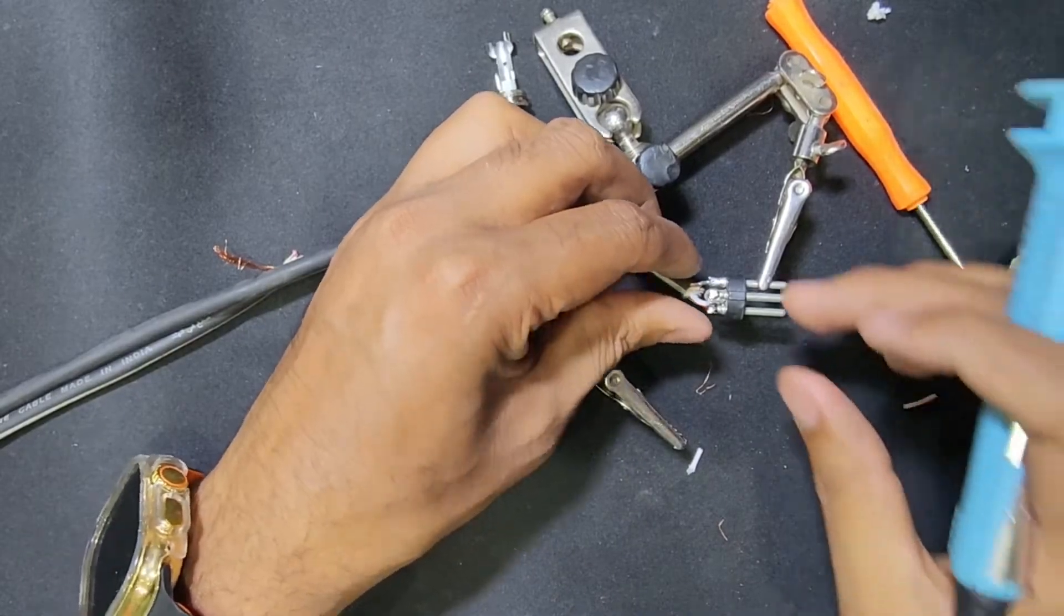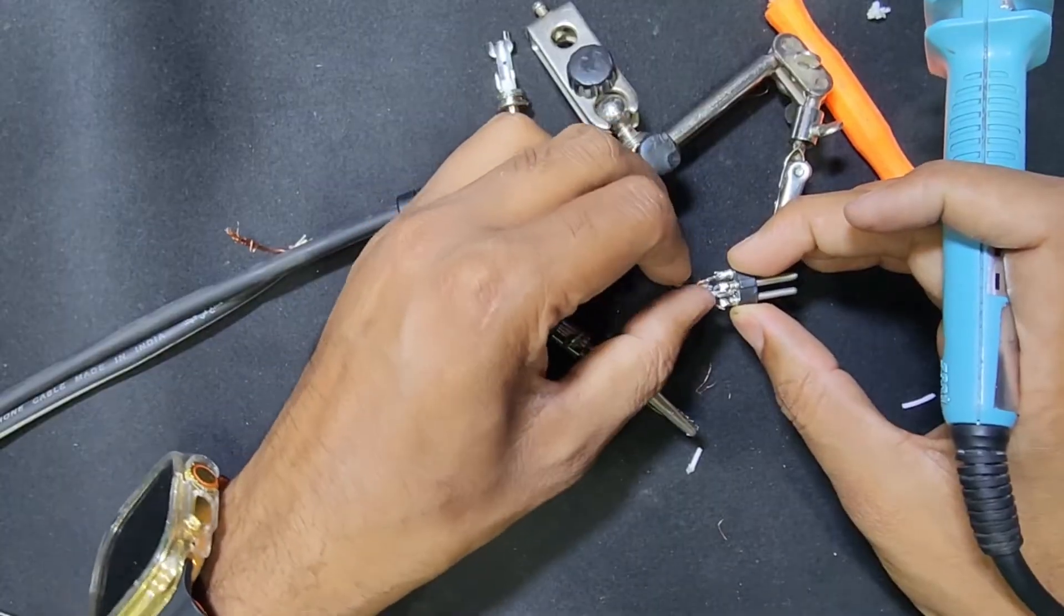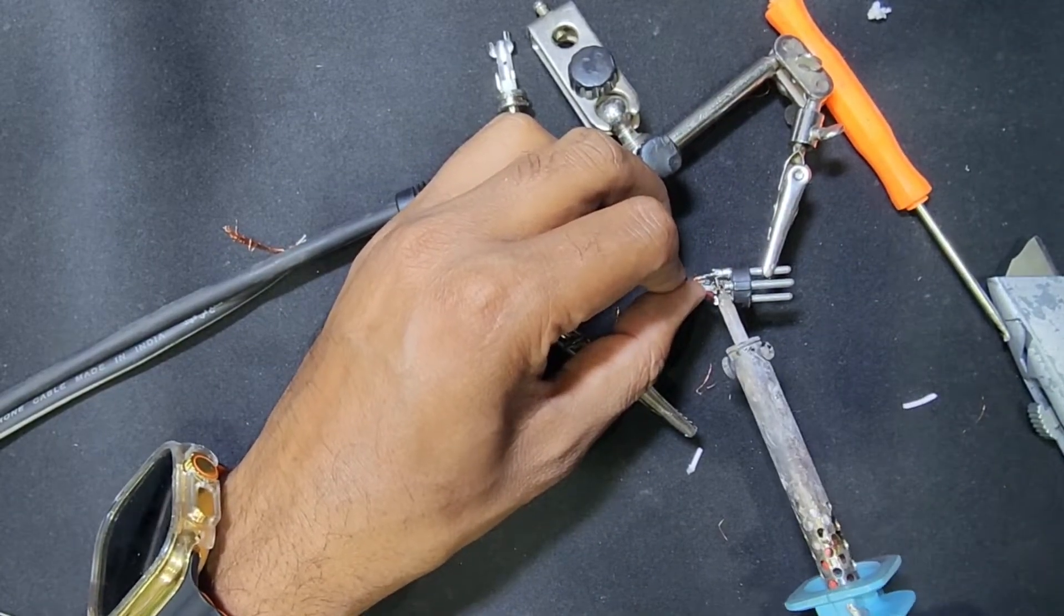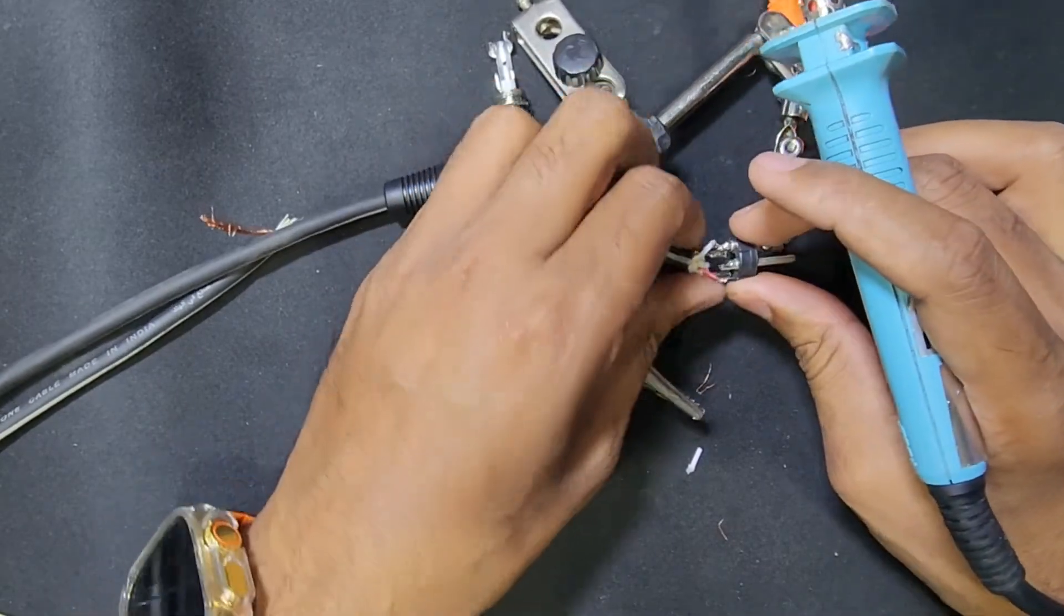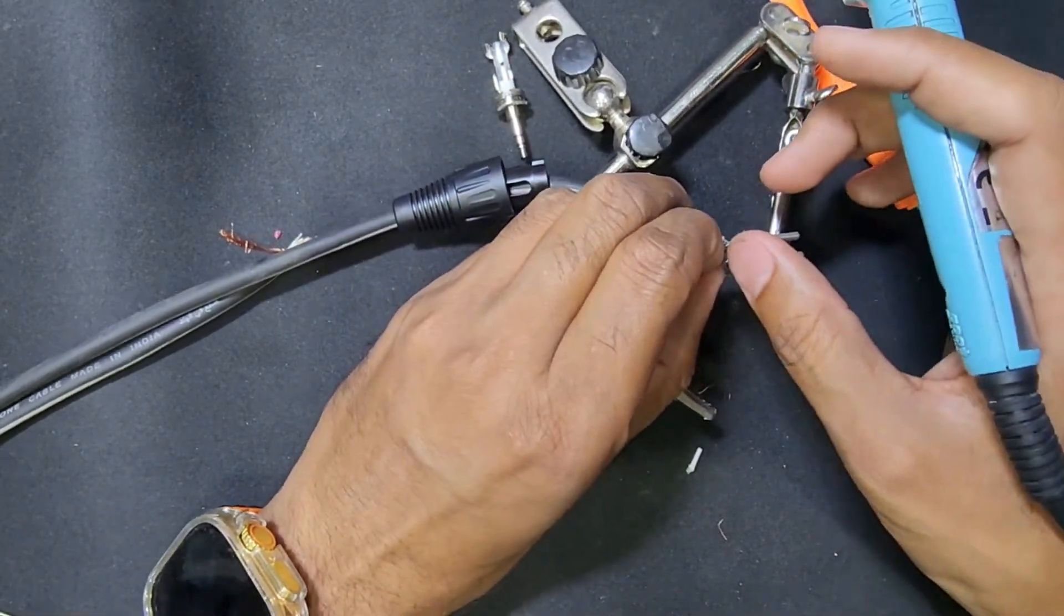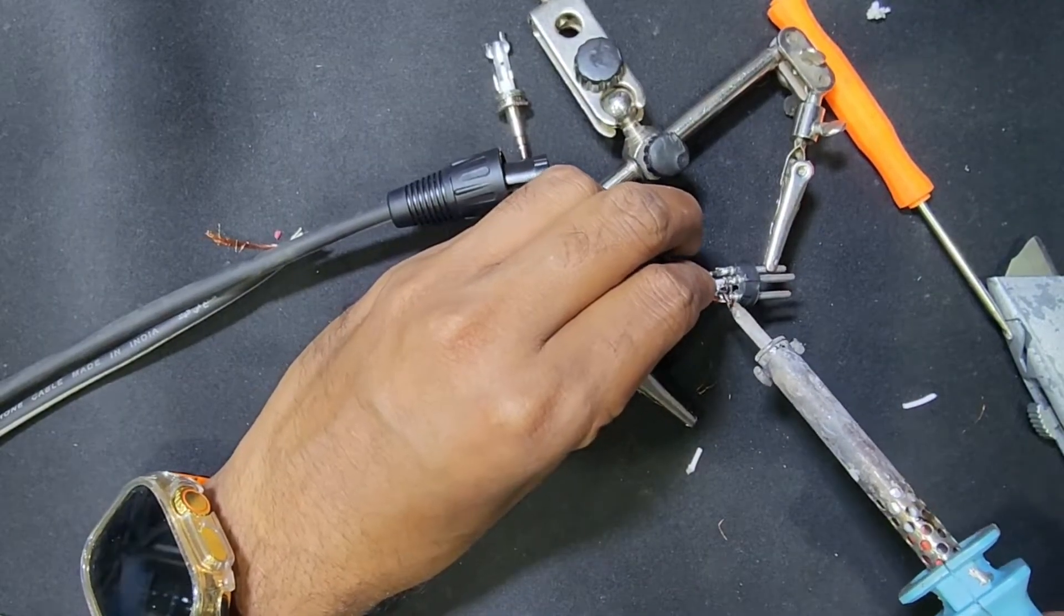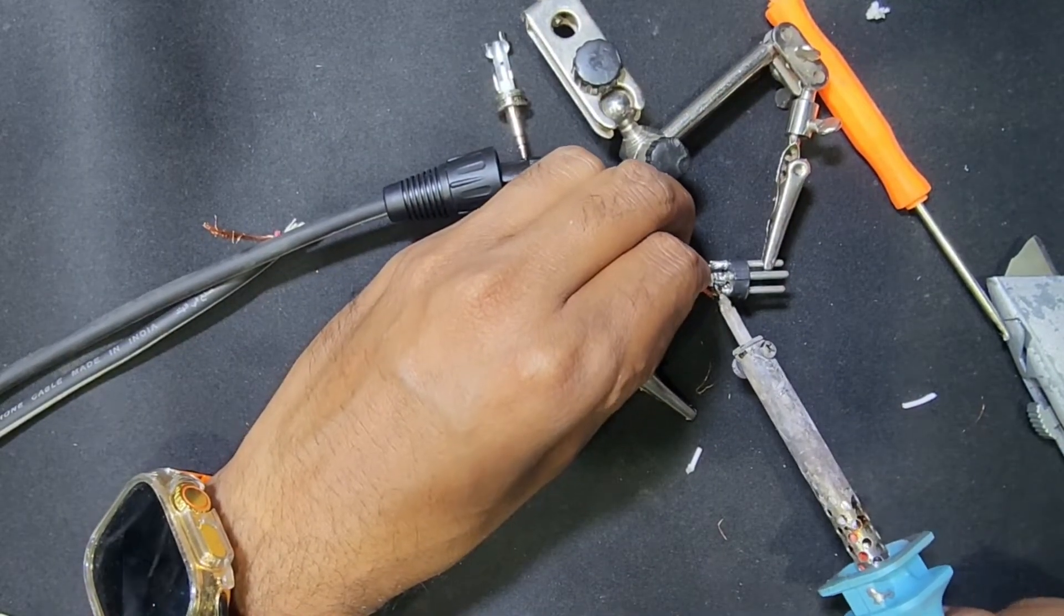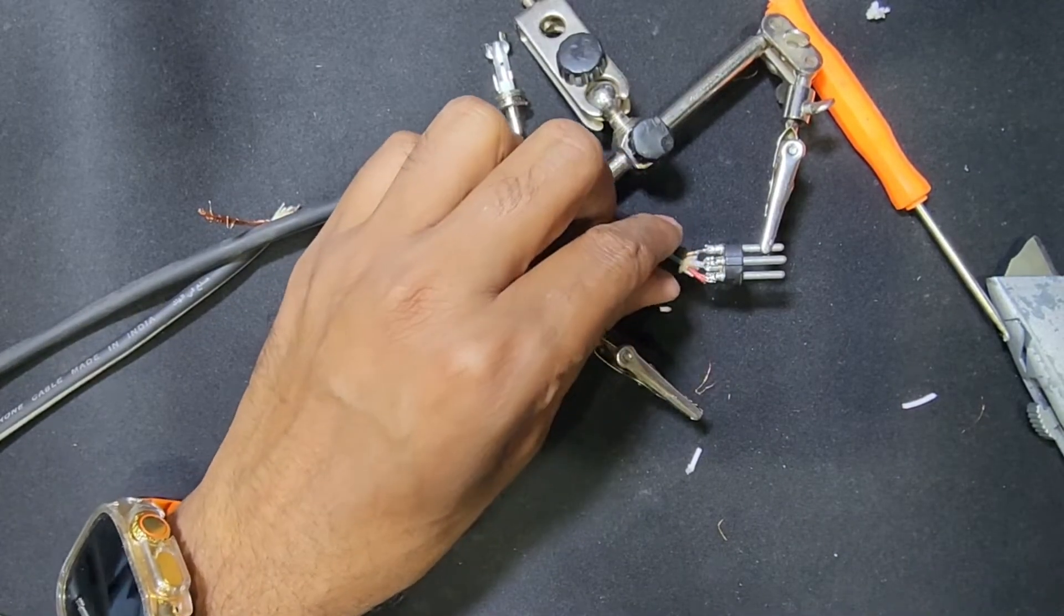Now number two is white color, and here is number three. The middle one is number three. Number two is red color. I will connect the red color to number two, so I'm done with all the soldering.